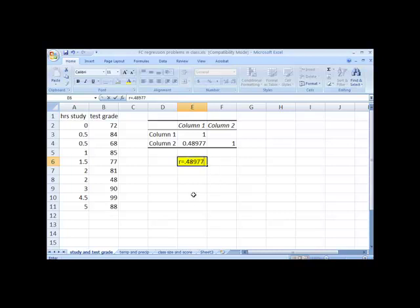Or about .49. We could say this is a moderately weak positive relationship. I would say weak because it's less than half, but it's not really, really low. So I use that qualifier of moderately.